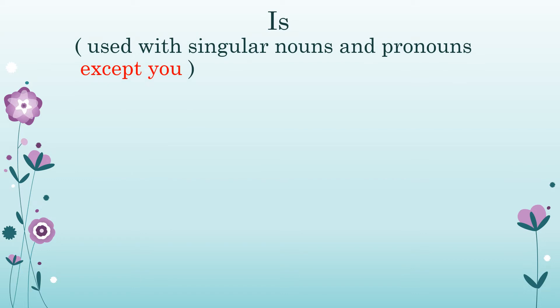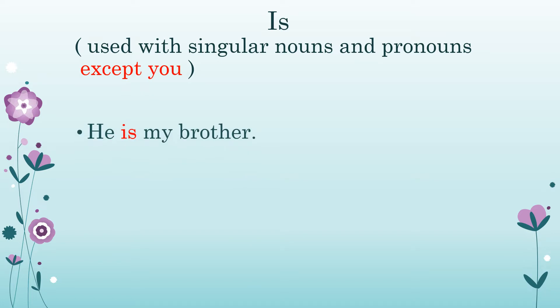Is is used with singular nouns and pronouns except you. Let's see he. He is a pronoun used for one person — male, or a boy. He is my brother. Is is used with he, which is one person.